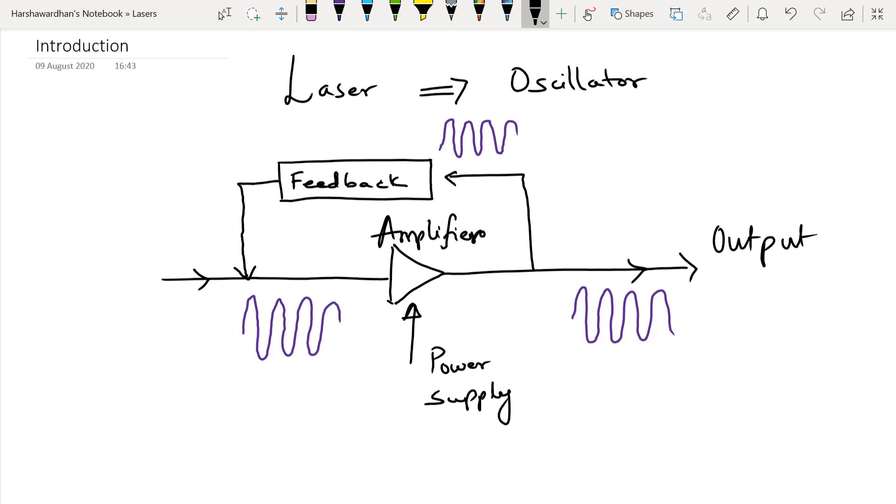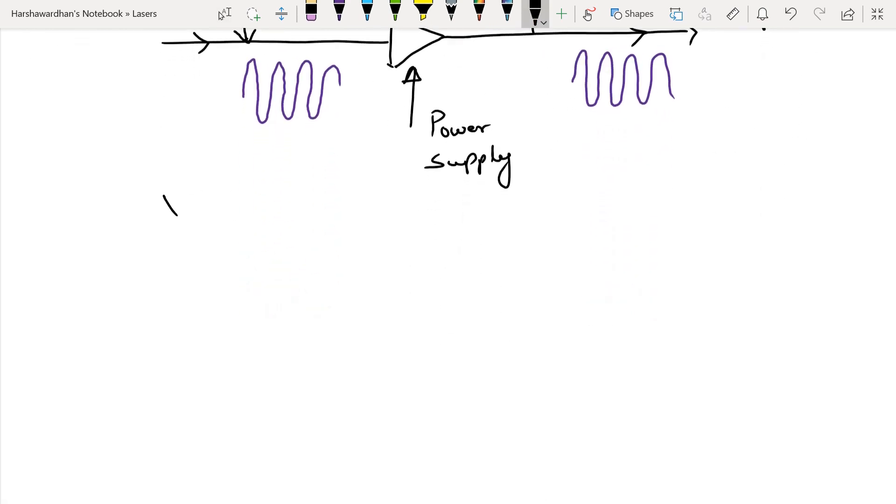So now of course there are two conditions that must be satisfied. The first one being that the amplifier must be such that the gain is larger than the loss associated with the system. The round trip gain which accounts for all the losses and so on, we will come back to this term later. The round trip gain is actually finite.